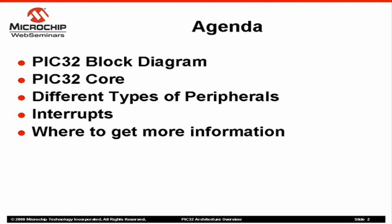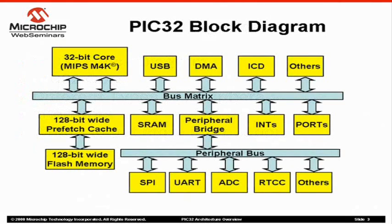Let's begin with the high-level block diagram of the PIC32. This is a simplified view of the PIC32 chip. The PIC32 employs the M4K 32-bit core from MIPS Technologies. The M4K is a Harvard architecture-based core — it contains separate instruction and data buses connected to the bus matrix. The core connects to the rest of the modules via the bus matrix, which is a high-speed switch that establishes a point-to-point connection between modules.